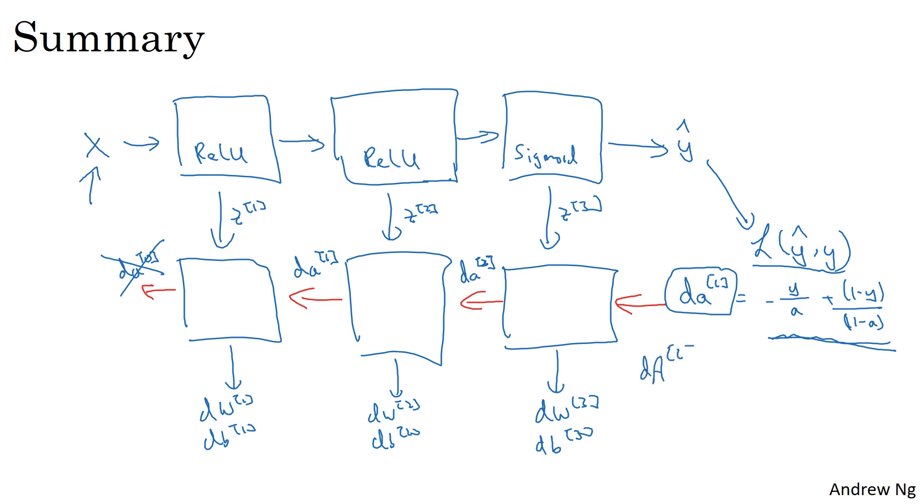If you were to have a vectorized implementation, then you initialize the backward recursion with dA^(L), capital A for layer L, which is going to be the same thing for the different examples: -y/A for the first training example + (1-y)/(1-A) for the first training example, down to the m training example. That's how you implement the vectorized version of backpropagation initialization.